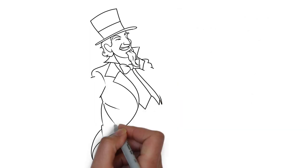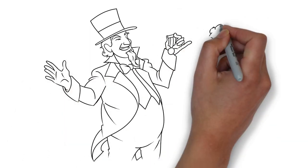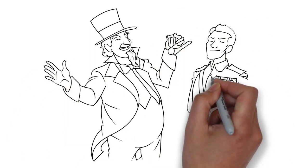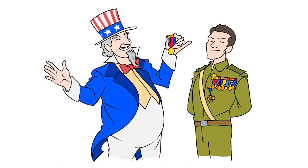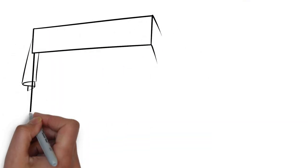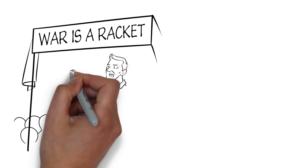Smedley Butler spent 33 years in the Marines, attaining the rank of Major General. By the time of his death, he was the most decorated Marine in history. Yet Butler became one of America's most vocal anti-imperialists.